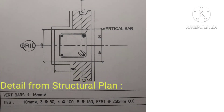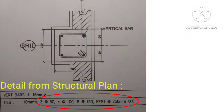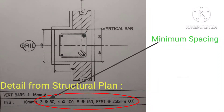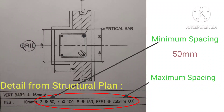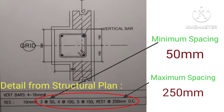In structural plans, we see details of column reinforcement something like this: 3 at 50, 4 at 100, 5 at 150, and rest at 250 OC. These details indicate the spacing of lateral ties. The first spacing indicates the minimum spacing and the last spacing indicates the maximum spacing. In this case, 50mm is the minimum spacing and 250mm is the maximum spacing.